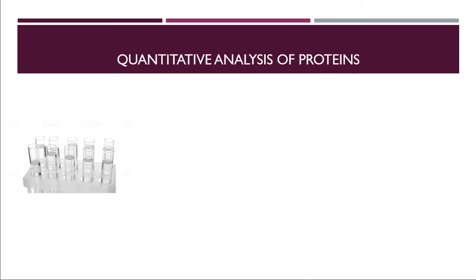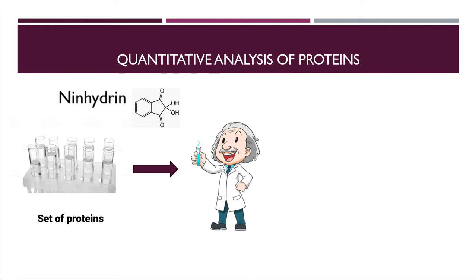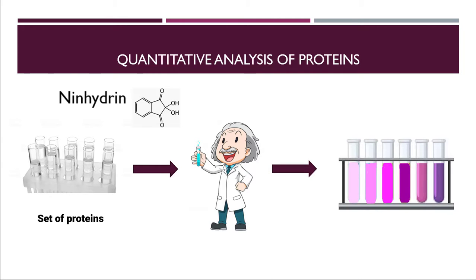Now we'll take these test tubes and then we'll put a solution called ninhydrin reagent and then we'll wait for these test tubes to change their color. When the color is changed, you can see different shades of purple color there.